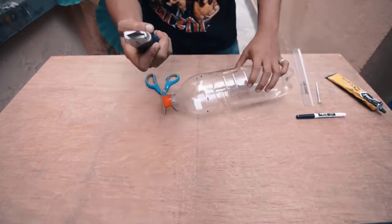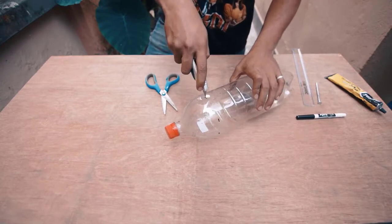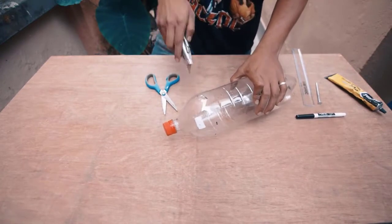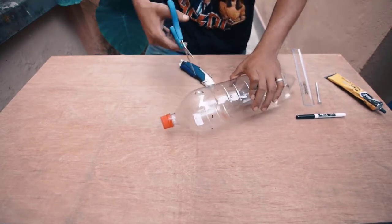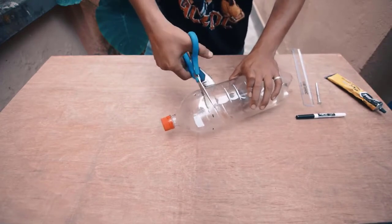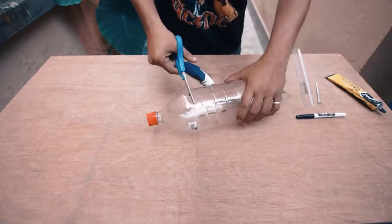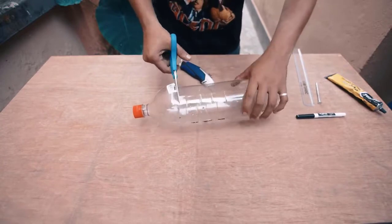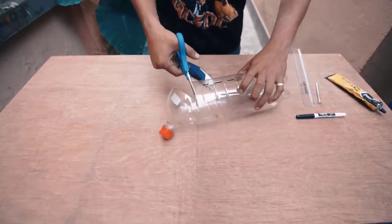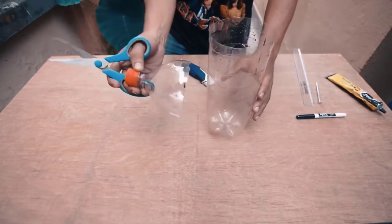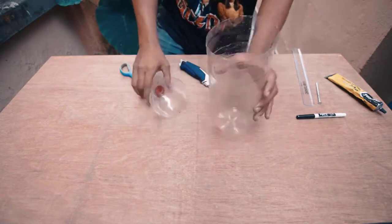Once you have enough marks on there you can use a knife like this one to puncture the bottle and then use scissors to finish off cutting the lid. Note that it's important to cut the lid as straight as possible and to cut it before the taper begins towards the lid.